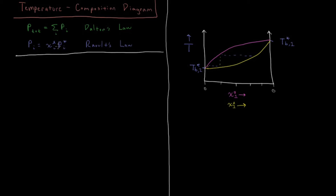We have two laws here governing the vapor pressures of our different components. We have that the total pressure is just the sum of the pressures of each individual component — that's from Dalton's Law of Partial Pressures. And for ideal solutions, the vapor pressure of an individual component Pi is just equal to the liquid mole fraction of that component times the vapor pressure of that pure liquid. That is only true for ideal solutions.